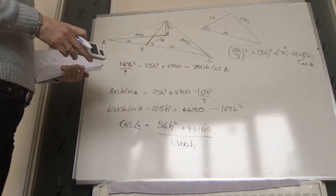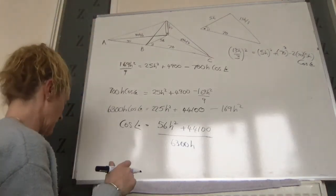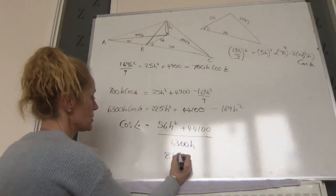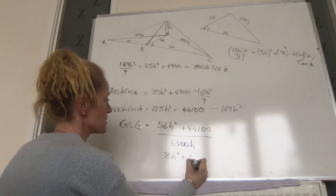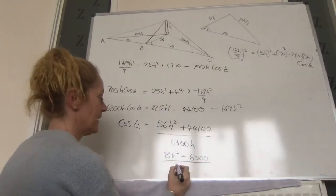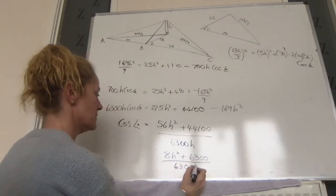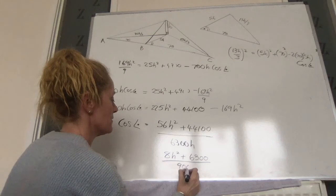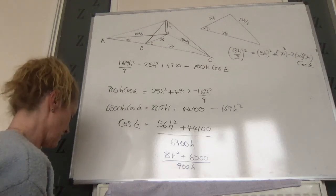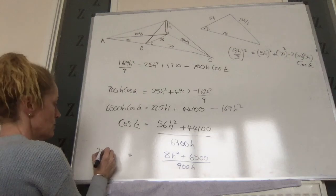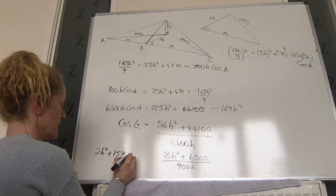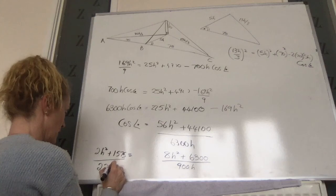We should be able to divide into that. 7 goes into all of them, I think. So we're going to get 7 into that goes 8h squared, plus 7 into that goes 6300, over 900h. And I think we can then divide by 4, so if we divide by 4, we're going to get 2h squared plus 1575 over 225h.